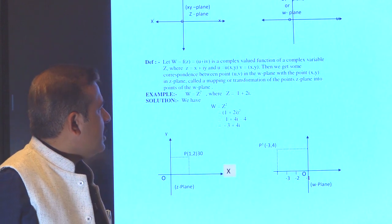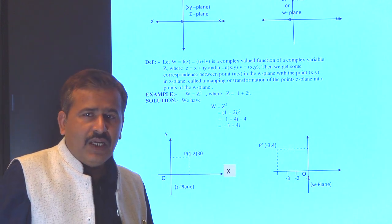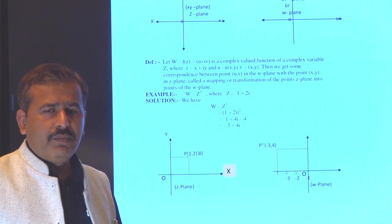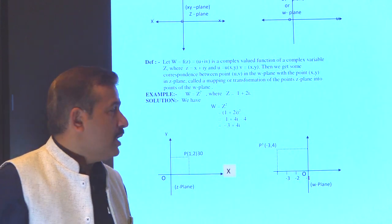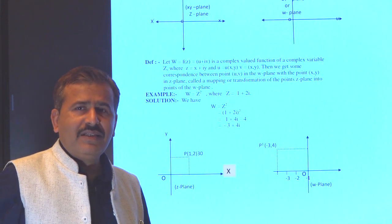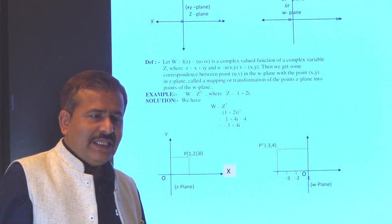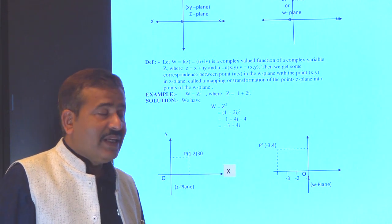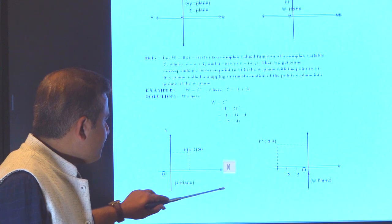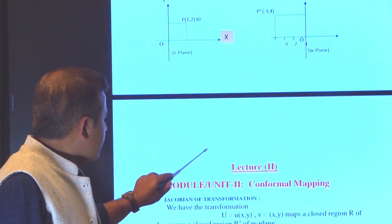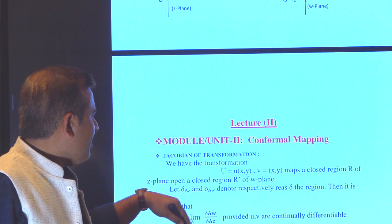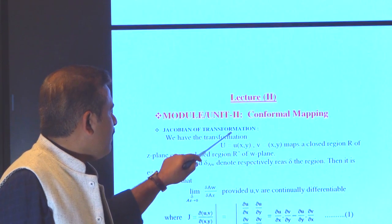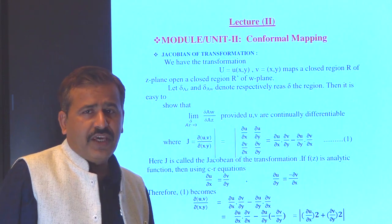In today's lecture, we went through the meaning of mapping — mapping is the transformation — and how we change the z plane to the w plane. In the next video, we will discuss another format of conformal mapping, that is the Jacobian of the transformation. Thank you.